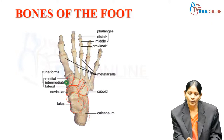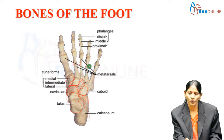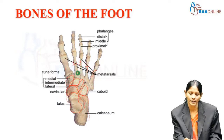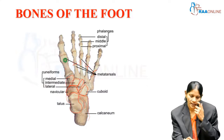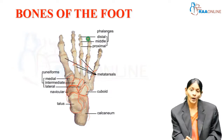With the cuneiforms and the cuboid, we have the first, second, third, fourth, and fifth metatarsals. The heads of the metatarsals are placed distally and the bases are placed proximally. And distal to the metatarsals, we have the phalanges.